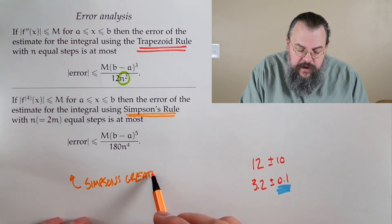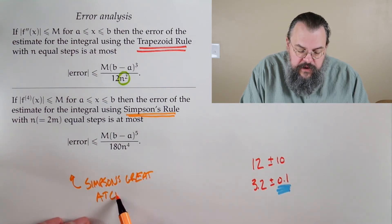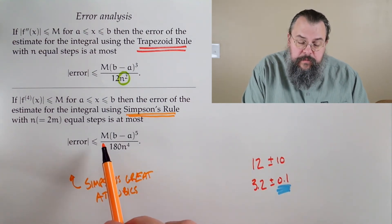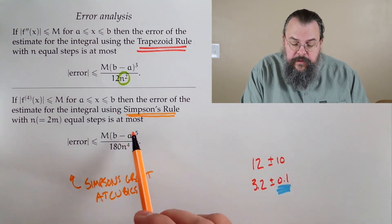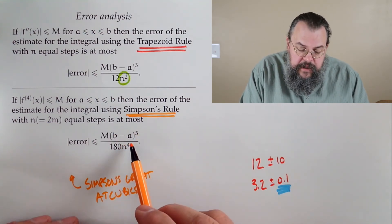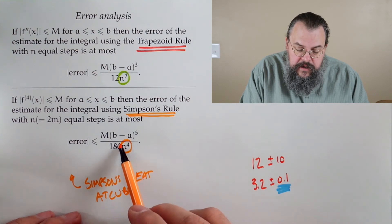So anyways, as before, we say, look, look at the fourth derivative, and suppose we can bound it. So again, this is the bound on the fourth derivative. You have a similar expression, (b minus a) to the fifth, over 180, and now n to the fourth.